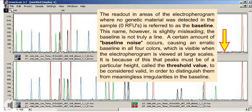The readout in areas of the electropherogram where no genetic material was detected in the sample, zero RFUs, is referred to as the baseline. This name, however, is slightly misleading. The baseline is not truly a line.